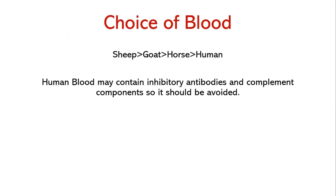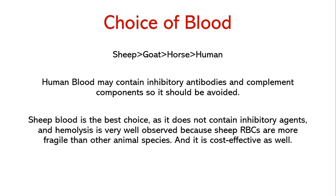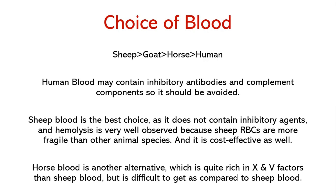Regarding the choice of blood, human blood may contain inhibitory antibodies and complement components, so it should be avoided. Sheep blood is the best choice as it does not contain inhibitory agents, hemolysis is well observed because sheep RBCs are more fragile than other animal species, and it is cost effective. Horse blood is another alternative, quite rich in factors 5 and 10, but it is more difficult to obtain than sheep blood.